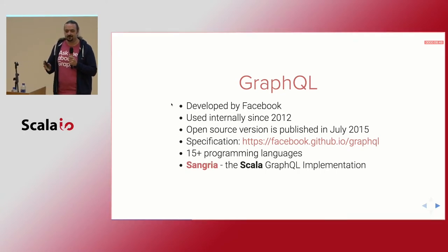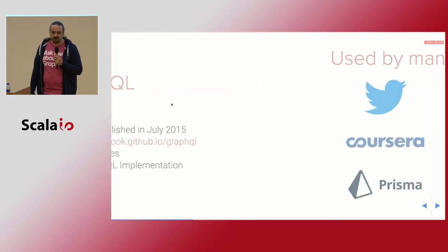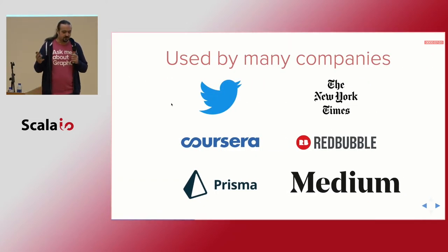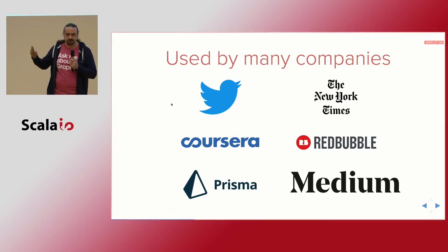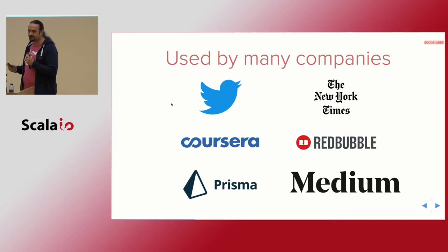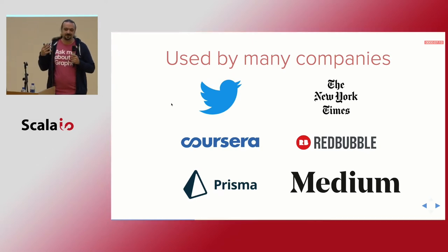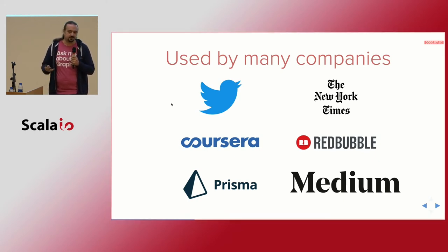Sangria helps you build services and provide a GraphQL API from your Scala applications. It is already used by a lot of companies. Today I would like to try to give you an idea why those companies chose GraphQL, why they would like to use it, and what kind of benefit it might offer compared to, say, REST API.